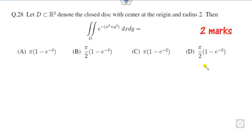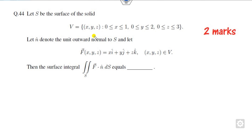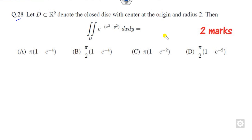Let's quickly recall that Q28 is of two marks and related to double integration, while Q44, again of two marks, is double integration over surface S. You can easily get two plus two marks, four marks within one minute in your GATE 2022 or future examinations. Let me show you how to solve that.